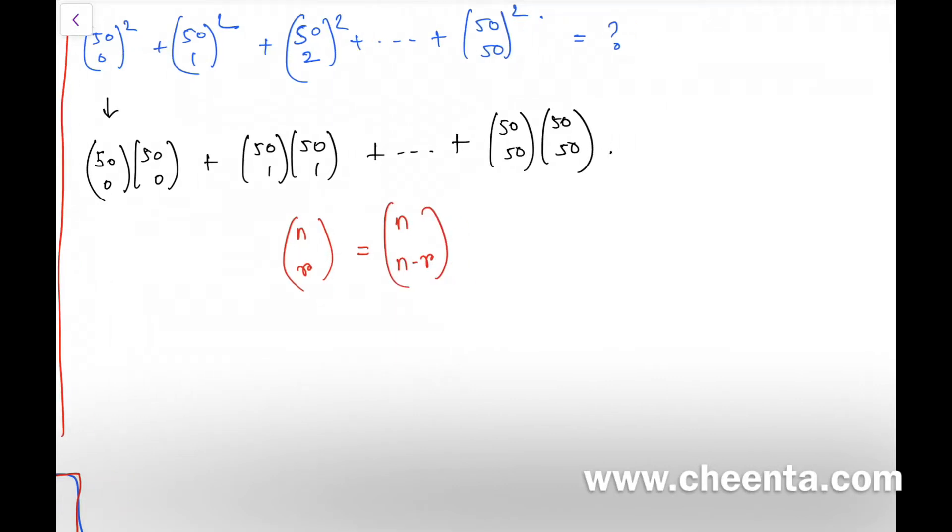By the way, if you are coming first time to this video, recall that n choose r is sometimes written in algebra books as nCr, which has the formula n factorial over r factorial times (n-r) factorial.